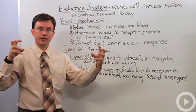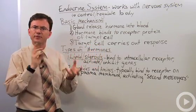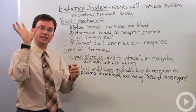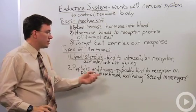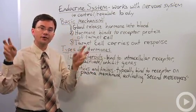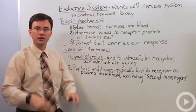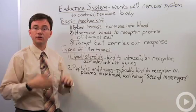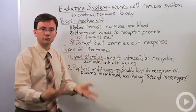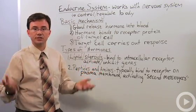Peptides, which are chains of amino acids, or amines, which are individual modified amino acids, typically bind to a receptor on the outer surface of the plasma membrane. When they do that, the protein causes changes that activate other chemicals within the cell, which then carry out the activity. These other chemicals are called second messengers — if the hormone is the first messenger, the newly activated molecules inside the cell are the second messenger.